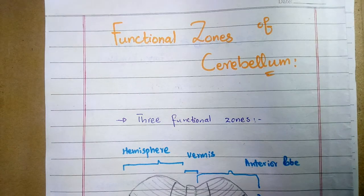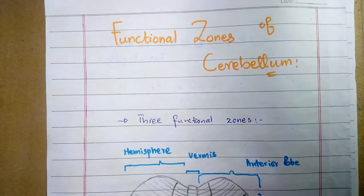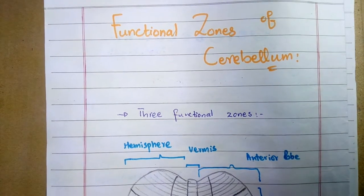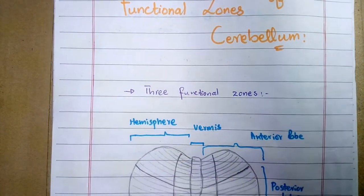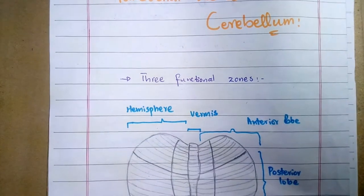Welcome to my channel. In this video I'll talk about the functional zones of the cerebellum. The cerebellum is the largest part of the hindbrain and plays an extensive role in rapid muscular activities, controlling the timing and smooth sequential movements.